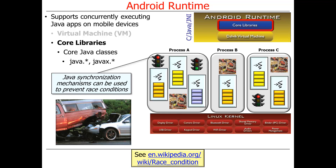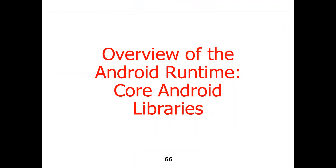Synchronization mechanisms are used to prevent race conditions. We'll talk more about Java synchronization mechanisms later. This particular class won't go into a lot of detail about synchronization — CS282 and CS281 go into more detail. We will cover them a little bit, though. That's a quick overview of some of the core Java-related runtime features that come with Android.